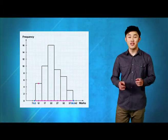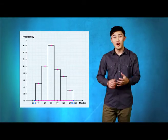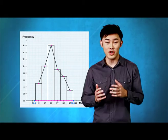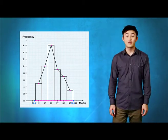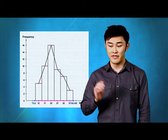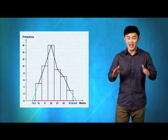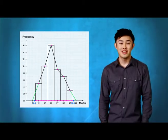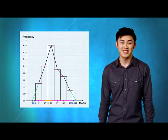A frequency polygon is plotted by joining the dots at the centre of each bar. To form a frequency polygon, all we have to do is join the midpoints of each class with straight lines. Don't forget to extend the line of the graph by one class interval beyond the first and the last midpoints, so that the graph touches the x-axis. The trick is to know the gap between each midpoint, which is 5 in this case.